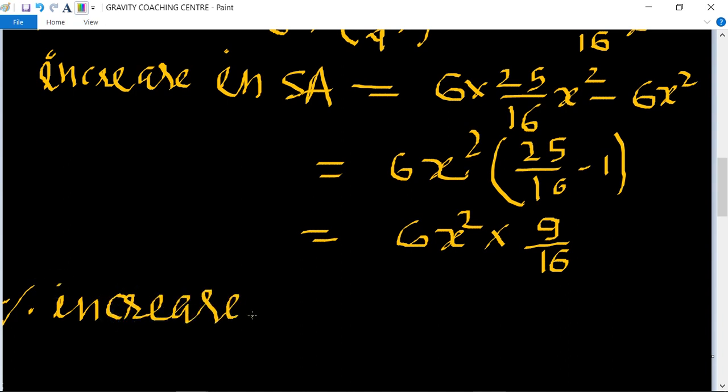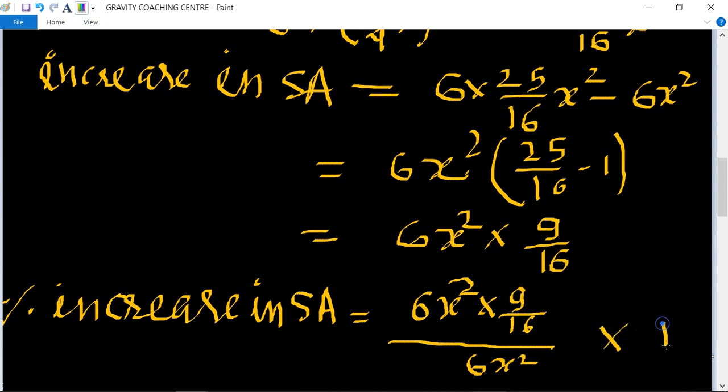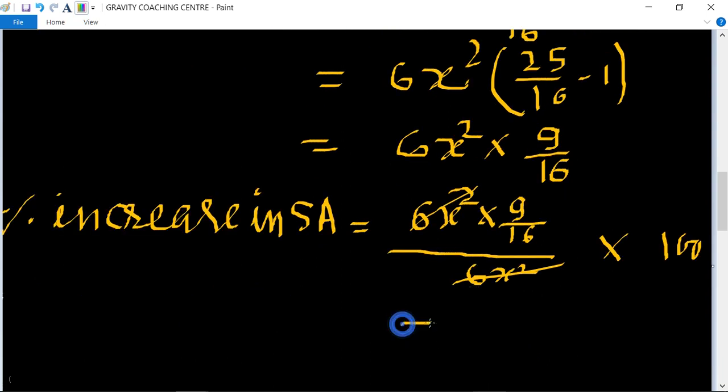The difference is 6x² × 9/16 divided by 6x² multiplied by 100. 6x² cancels, so it equals 9/16 × 100.